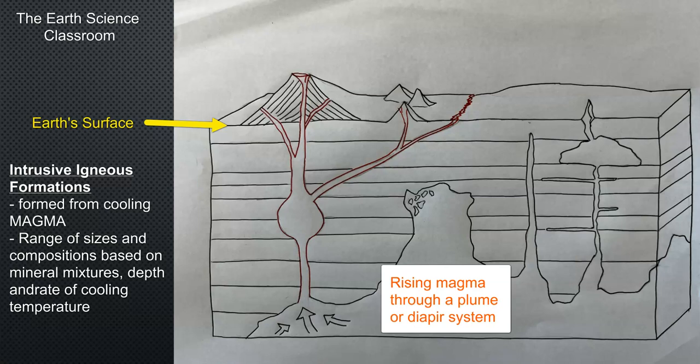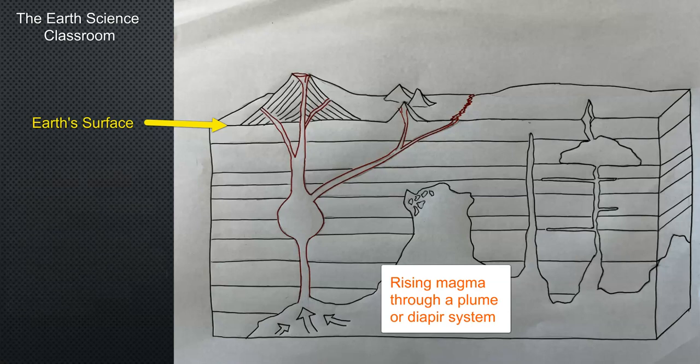Pressure builds up from generally the gas and volatiles inside the magma and will come to a certain point where it will cause an eruption.